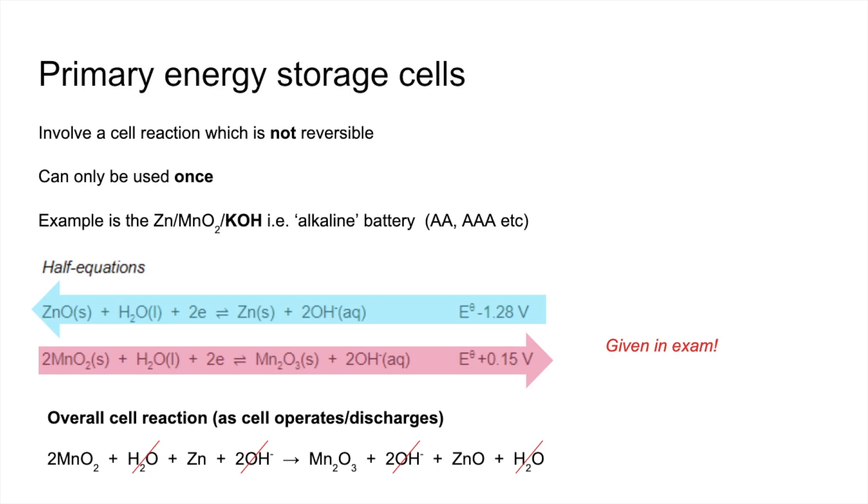The voltage of the cell, well it's just the most positive electrode potential minus the least positive, and so therefore you get a voltage of 1.43 volts.